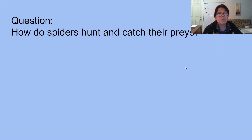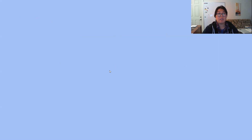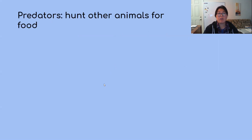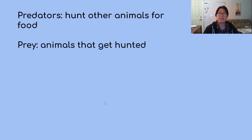The question we're going to ask is: how do spiders hunt and catch their prey? There are two vocabulary words to write down. First: predators — animals and insects that hunt other animals for food. Even humans are predators. Second: prey — animals that get hunted. Spiders are predators, and they hunt prey so they can eat.